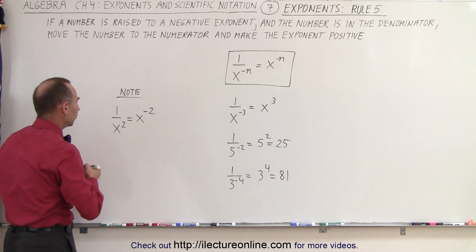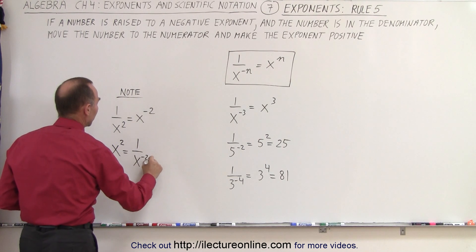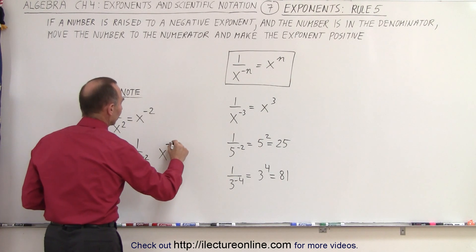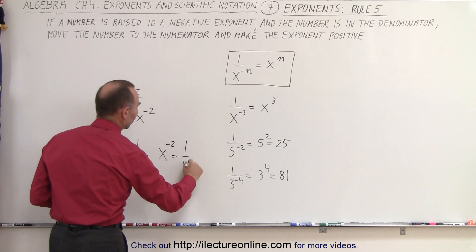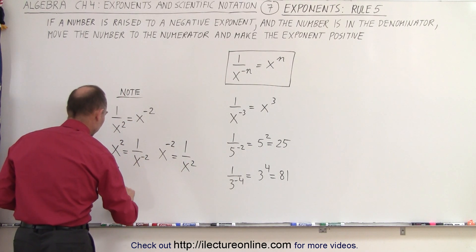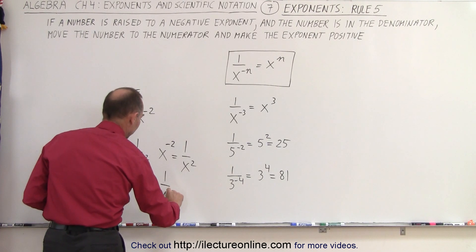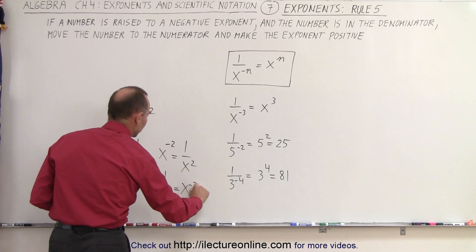So, in other words, if we have x to the second power, that is equal to 1 over x to the negative 2 power. If we have x to the negative 2, that is equal to 1 over x to the positive 2. And vice versa, 1 over x to the negative 2 is equal to x to the second power. Or 1 over x to the second power is equal to x to the negative 2 power.